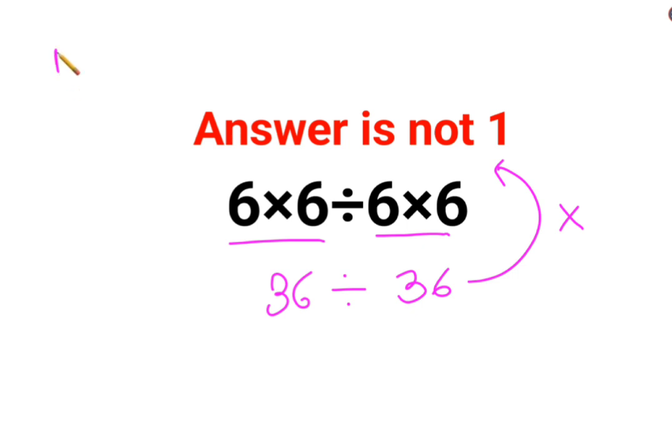Please understand, division and multiplication always hold equal precedence. So all you have to do is just go from left to right.